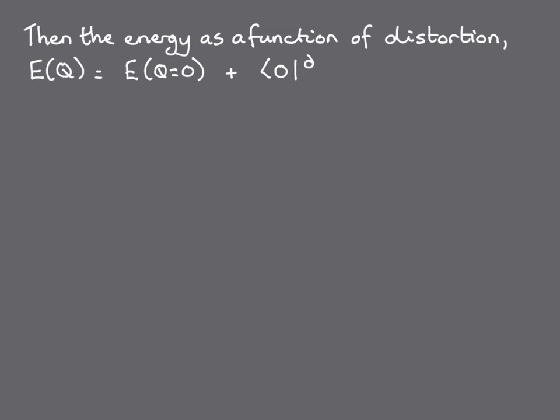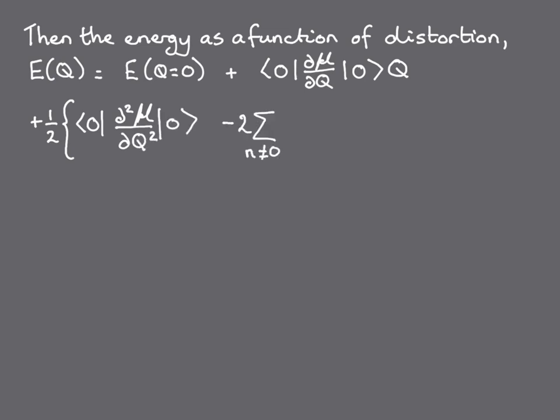Then, using standard perturbation theory methods, the energy as a function of the distortion q can be written down as the zeroth-order energy plus a first-order correction that's linear in q plus two second-order terms which, importantly, are opposite in sign. You can look in any standard perturbation theory textbook for a derivation.